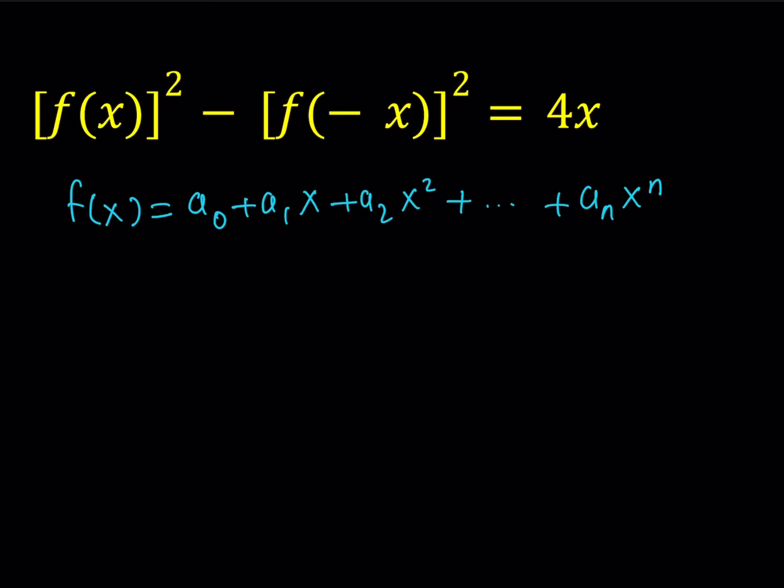I'd like to substitute this into the equation, but I also need to find f of negative x, which can be found by replacing x with negative x. That gives me a0 minus a1x plus a2x squared. Notice that terms with even powers are positive and the others are negative. We don't know what n is, so we'll put three dots there.